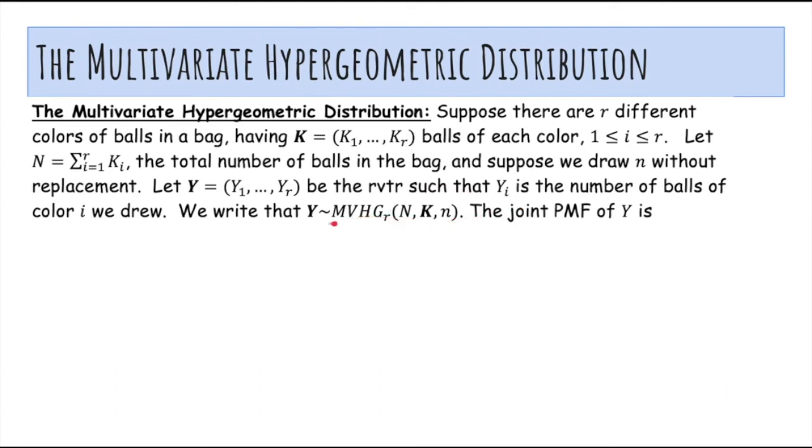So now Y has a multivariate hypergeometric distribution. The joint PMF of Y can be written like this. And notice that this is basically the same as what we did. So on the bottom, the sample space is the total number of sets of little n balls out of the total number of big N balls in the bag. So it's the number of sets of size little n.